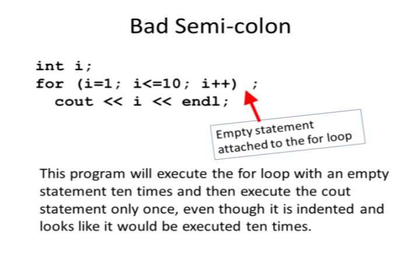What happens is there's still a statement attached to the FOR statement, but it's an empty statement. Now in this example, the FOR statement still executes ten times, and it executes that empty statement ten times. Then it executes the COUT statement only once. Instead of saying 1, 2, 3, 4, 5, 6, 7, 8, 9, 10,